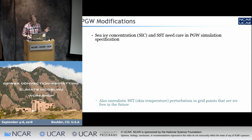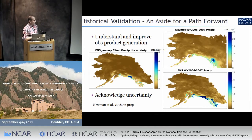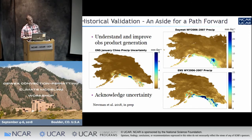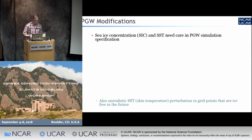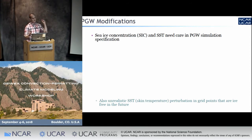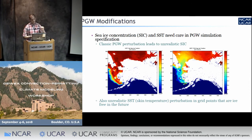Getting back to the PGW simulation: when dealing with this domain, a lot of applications of the PGW approach haven't really dealt with sea ice or SST perturbations explicitly when dealing with loss of sea ice. We had to think carefully about how to attack that. In strict PGW, you take some delta of all your fields and apply it — so in theory you could take the delta in sea ice concentration, apply it to the historical sea ice, and get some future sea ice concentration. But sea ice has highly nonlinear processes when things start to melt and break.